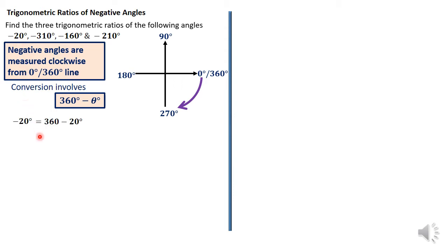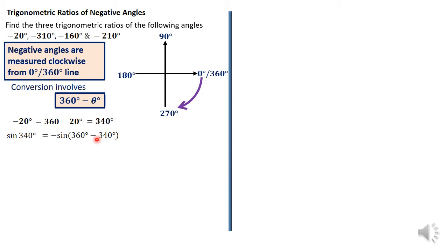For negative 20 degrees, we first convert: 360 minus 20 equals 340 degrees. So negative 20 degrees is the same as 340 degrees. The sine of 340 equals negative sin(360 − 340), because sine is only positive in the first and second quadrants — the conversion in that quadrant is 360 minus theta. Therefore sin(340°) = negative sin(20°) = −0.3420.